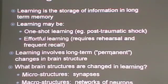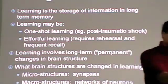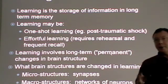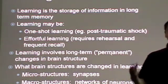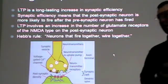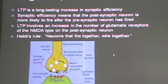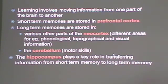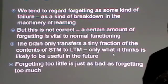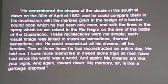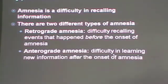Memory you can think of as storage bins — places, or functional repositories where we store information. Learning is the action which consists in putting information into those bins. Mechanisms of learning at a cellular or synaptic level involve a process called LTP, or long-term potentiation. At the more macro-structural level, learning involves moving information from one part of the brain to another. We tend to think of forgetting as some kind of failure and breakdown in the machinery of learning, but forgetting too little is just as bad as forgetting too much — nicely illustrated by a story by Jorge Luis Borges, Funes de Memorias.